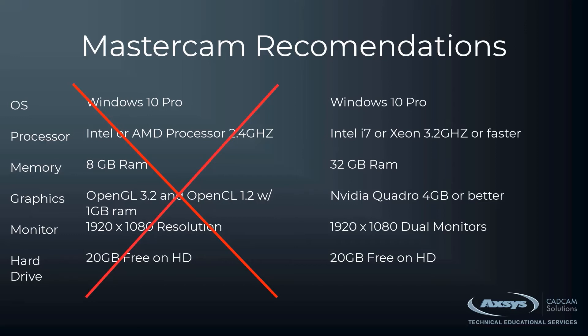The second recommendation is a lot closer to on point. Still Windows 10 Pro, but they recommend the Intel i7 or Xeon at 3.2 GHz — the Xeon is a little bit faster. We'll talk about i7 versus i9. If you're going to do the i7, I would definitely do at least a 9th-gen i7. 32 GB of memory — our recommendation is always get whatever you can afford, but 32 GB will definitely run the machine quite well. The Nvidia Quadro with 4 GB of dedicated graphics memory or better is a pretty good card. They make 6 GB and 8 GB cards now that are still reasonable in cost.